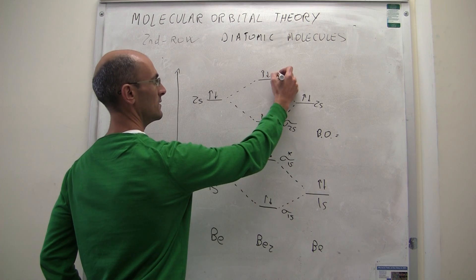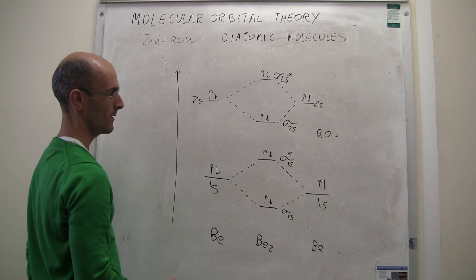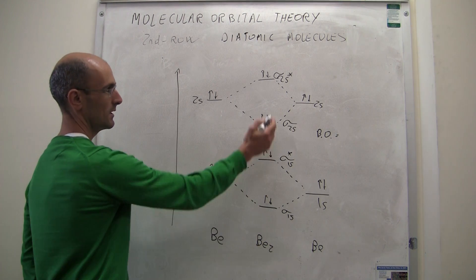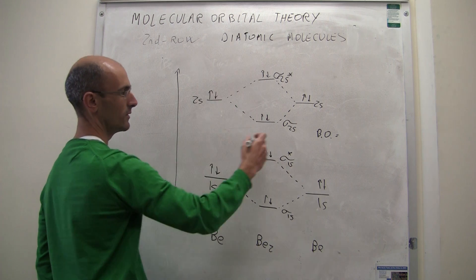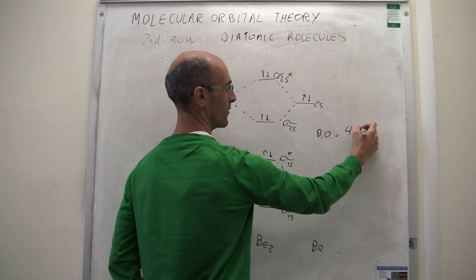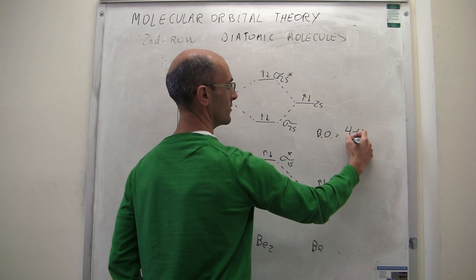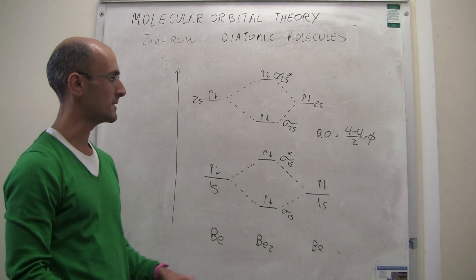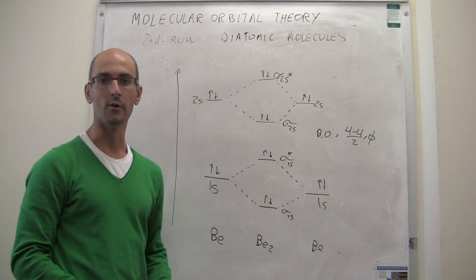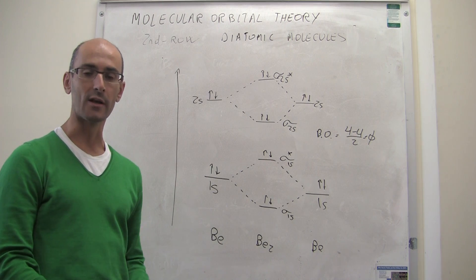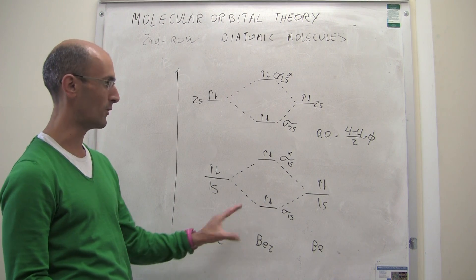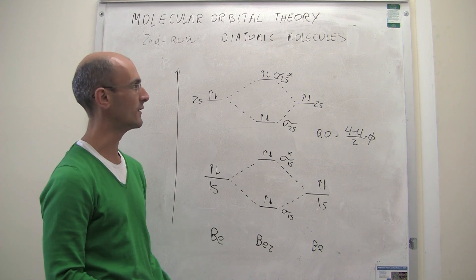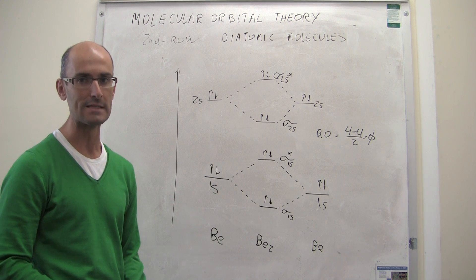For the sigma 2s, we have 2 and 2 — 4 electrons in bonding orbitals — and in the antibonding orbitals, we have 2 and 2 — 4. So the bond order is (4 minus 4) over 2, which equals 0. Molecular orbital theory predicts there is no covalent bond in the beryllium-2 species, and molecular orbital theory is successful in explaining the lack of covalent bonding in Be₂.